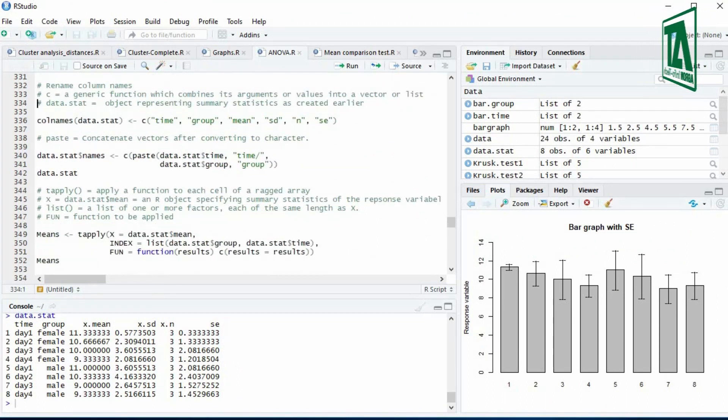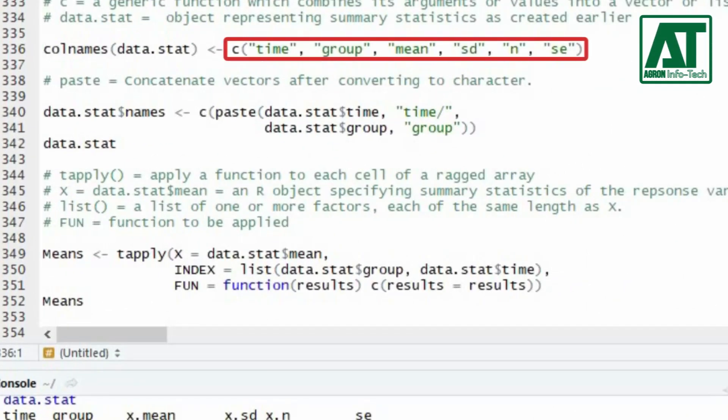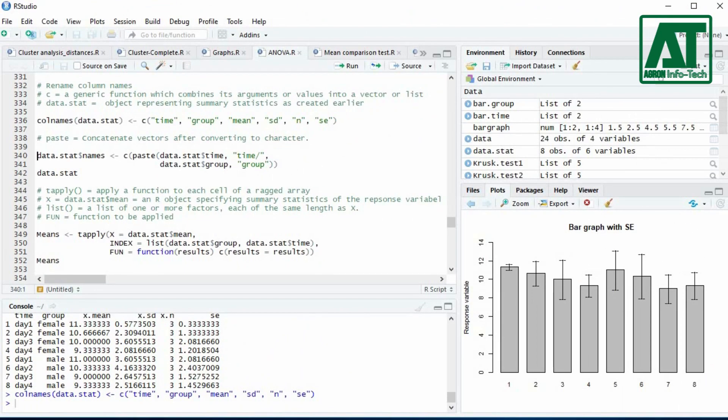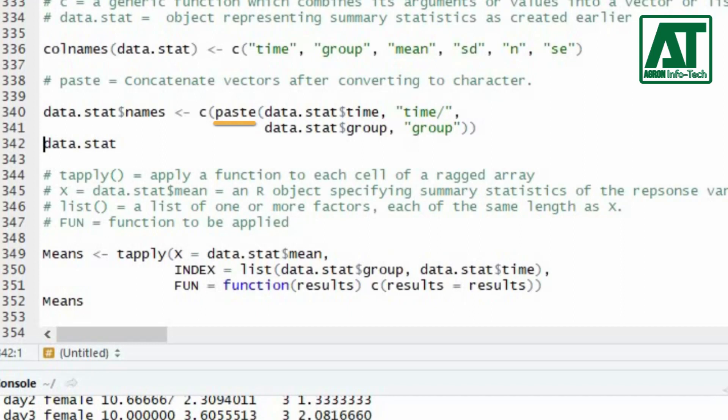Rename the columns by combining values according to the column names in a list using generic combine function. Now use paste function to paste concatenate vectors after converting to characters.